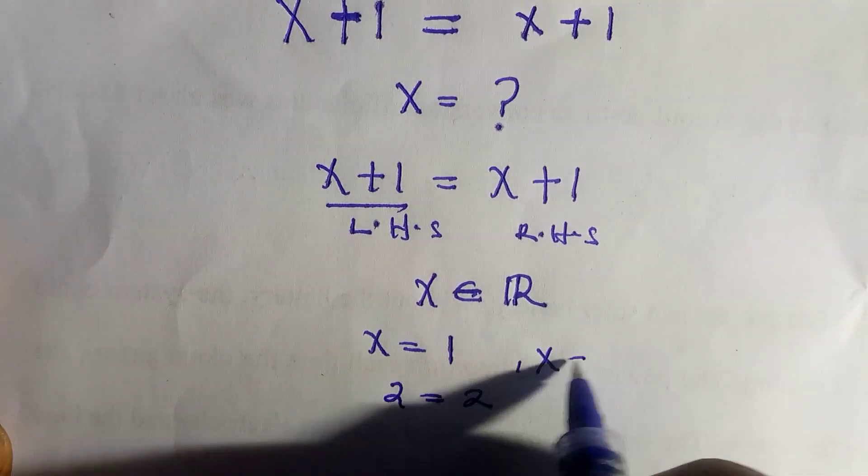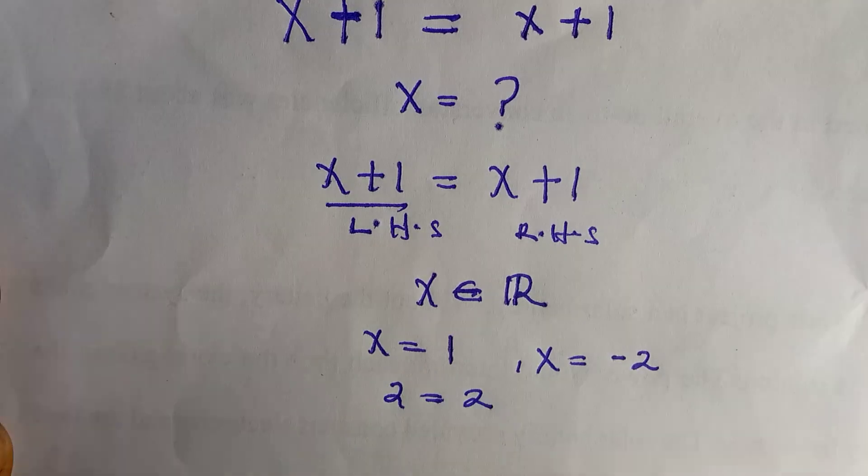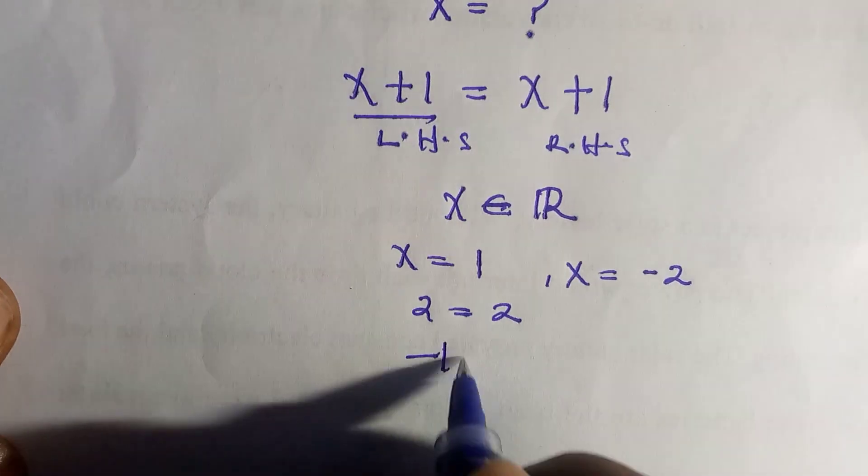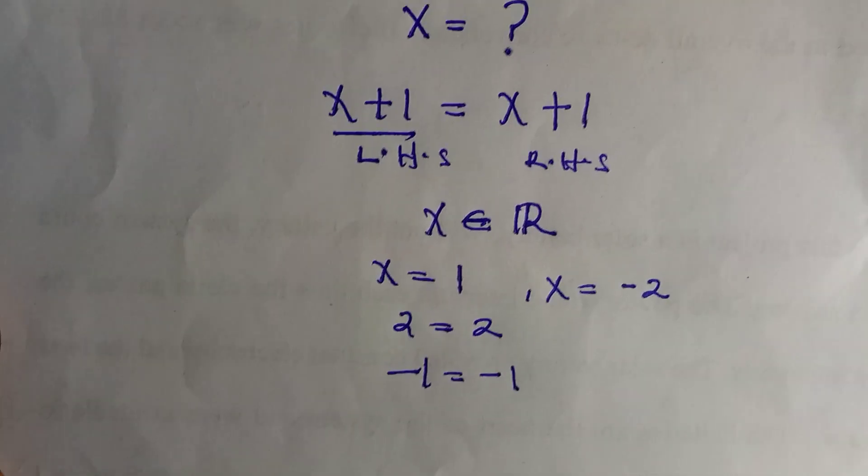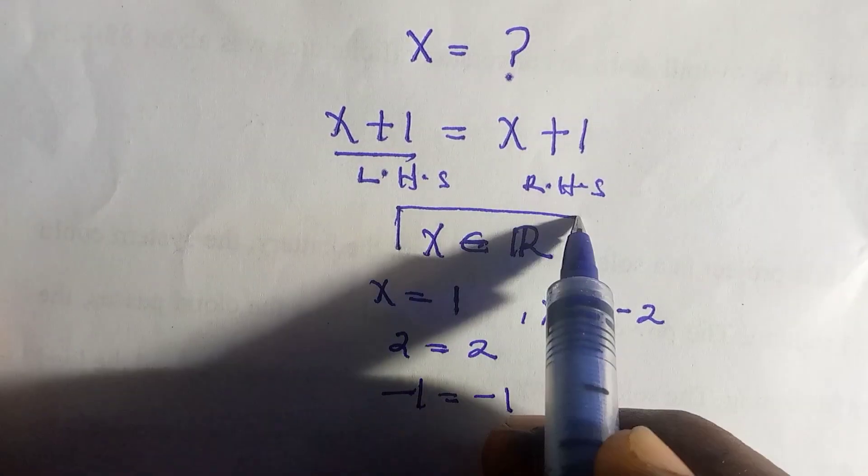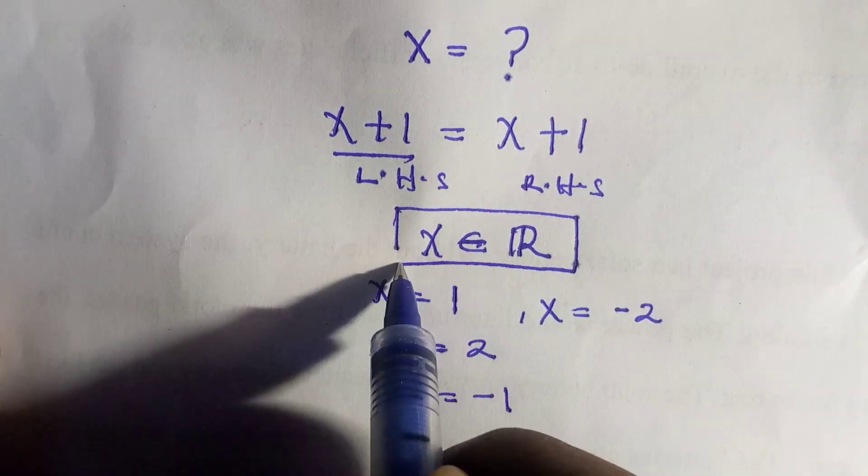We're going to have 2 equals to 2. And if we see x equals to negative 2, we have negative 1 equals to negative 1. So this means that all real numbers satisfy this equation.